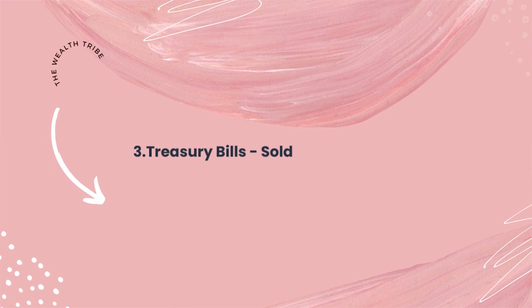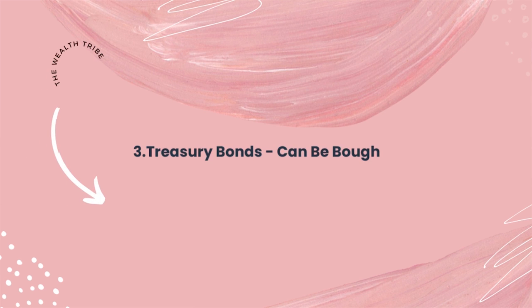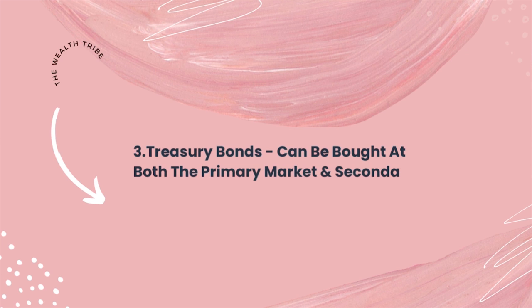The third difference is that treasury bills are sold at the primary market, which means they are sold by the Central Bank of Kenya. Treasury bonds, on the other hand, can be bought both at the primary market and at the secondary market. This means you can buy treasury bonds at the Central Bank of Kenya or when they are listed on the Nairobi Securities Exchange.